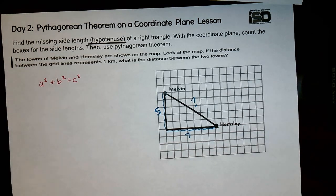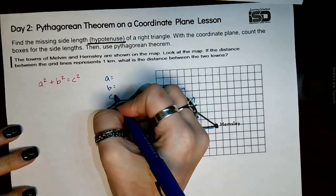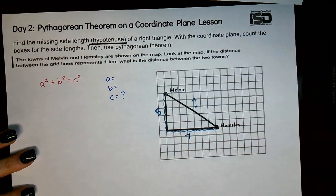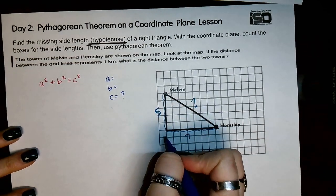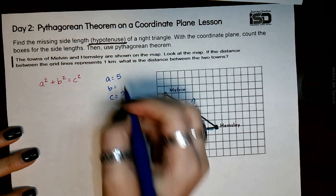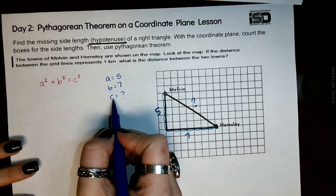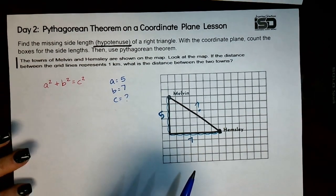So now we need to identify what those missing sides are. We're finding the hypotenuse, so that means that what we don't know is our c value. I'm going to make this a, so that's five. I'm going to make this b, and that's seven. So now these are known values, this is our unknown. We're going to plug in what we do know into our formula.